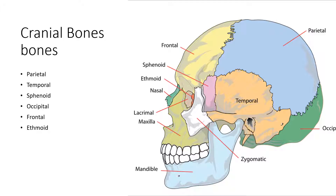There are several cranial bones: the parietal bone, the temporal bone, the sphenoid bone, the occipital bone, the frontal bone, and the ethmoid bone. The frontal bone is the most anterior bone of the skull, with the occipital being the posterior bone. The parietal is in the back middle, the temporal is on the side including your ear bones, the sphenoid is behind your eye socket, and the ethmoid is at the back of your eye socket.